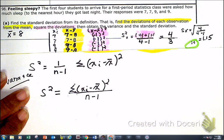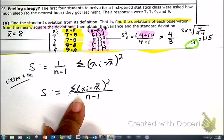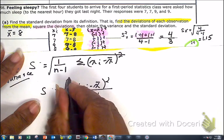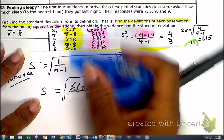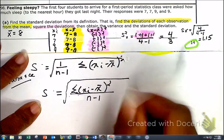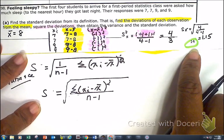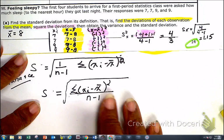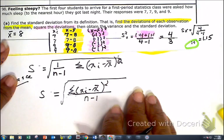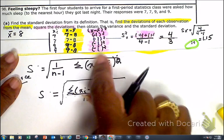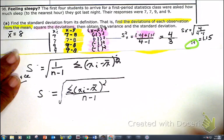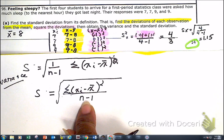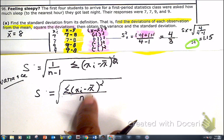So here's the variance. In order to find the standard deviation, all I've done is take the square root — remove the square. Here is the formula for the square root. As you look at the work, the answer comes out to be 1.15. The only reason I have you doing this is for multiple choice questions — know what this formula represents. You're given the formula, but you won't have to crank it out; you just need to know what it represents.